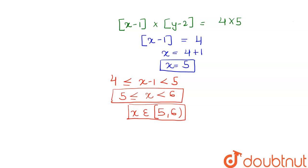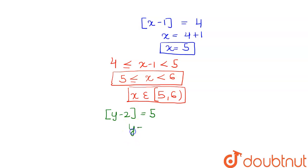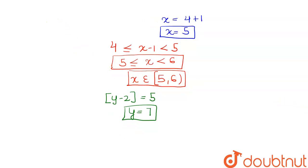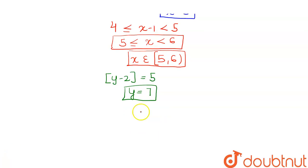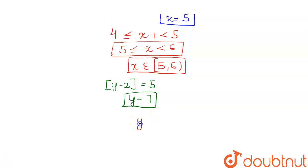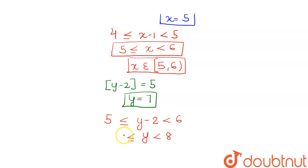Now we find the value of y. Comparing [y-2] into this, [y-2] equals to 5, so y equals to 7. We can say 5 ≤ [y-2] < 6. When we add plus 2, we get 7 ≤ y < 8.